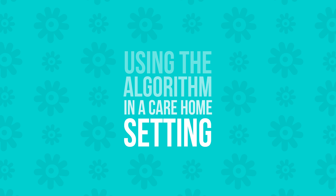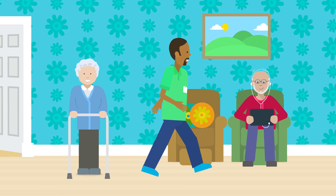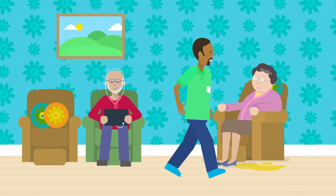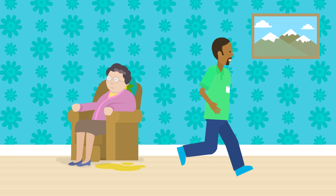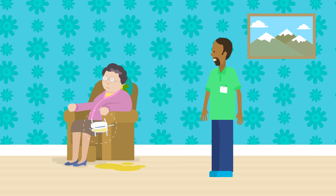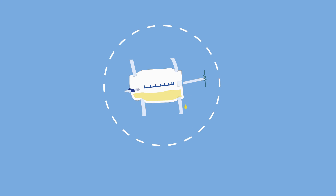Using the algorithm in a care home setting. Hardeep is a care worker in a care home. He walks past Betty, an elderly patient who has a urinary catheter in. Hardeep notices a large spillage of urine on the floor. He investigates and notices the tap on the catheter bag has not been closed correctly, causing urine to leak from the catheter bag onto the floor.